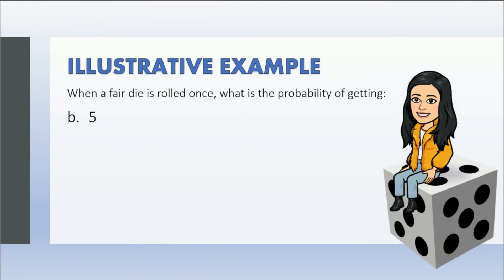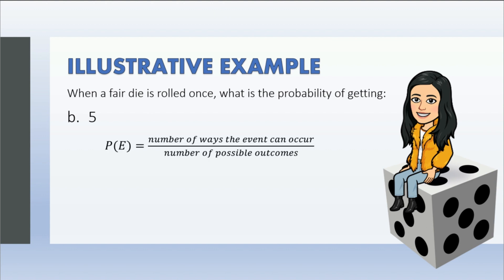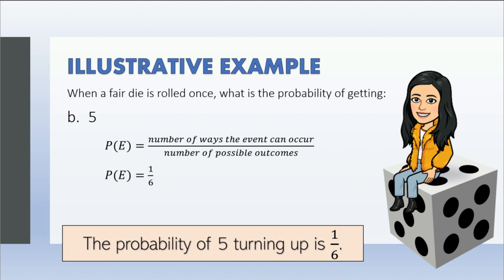Next, probability of getting five. We use the formula for probability of simple events. How many ways can five occur? It's one, because we only have one number five in a die. The number of possible outcomes is six. We now have one over six. The probability of five turning up is one over six. It means it is unlikely to happen.